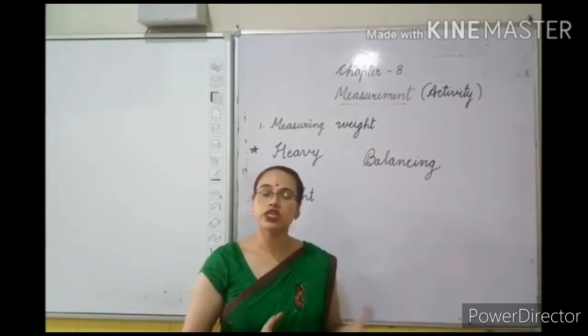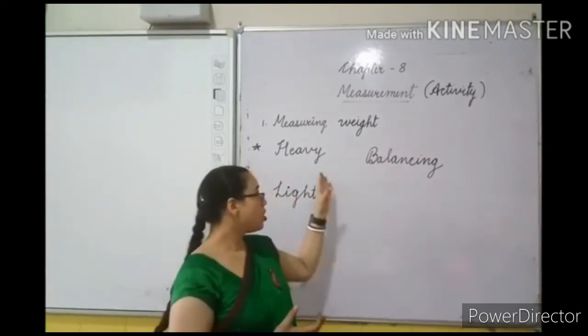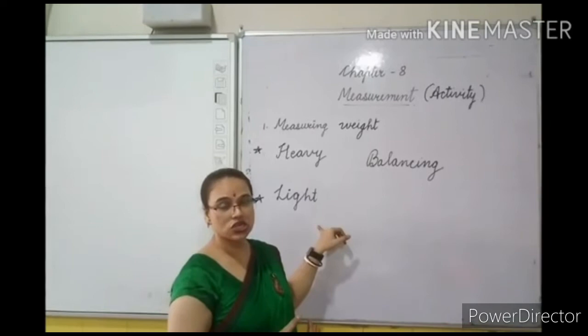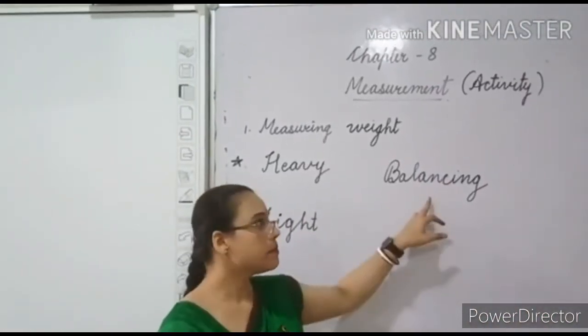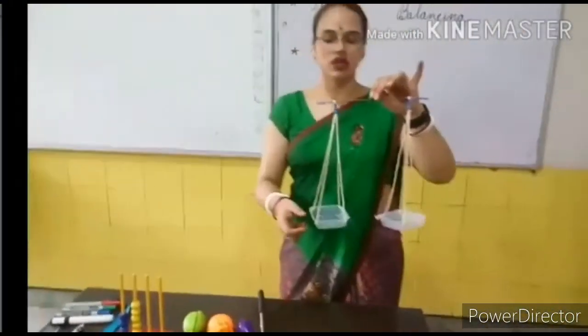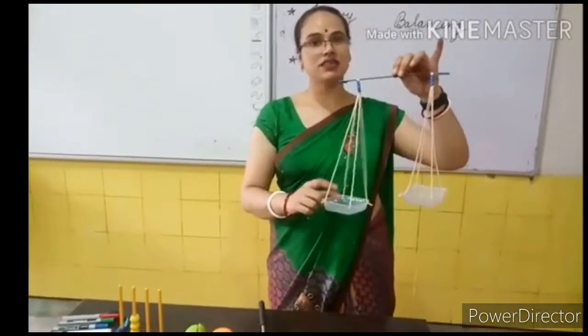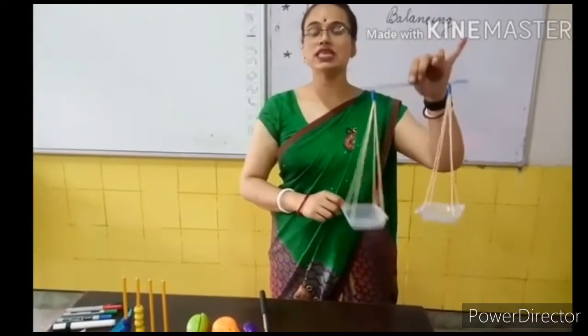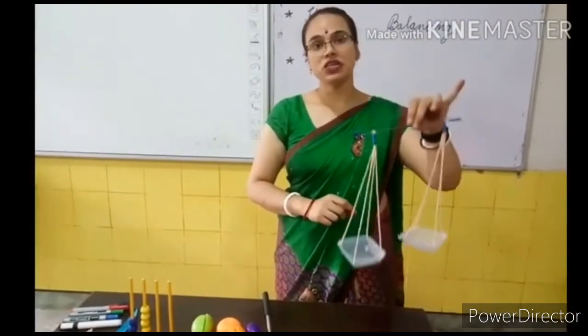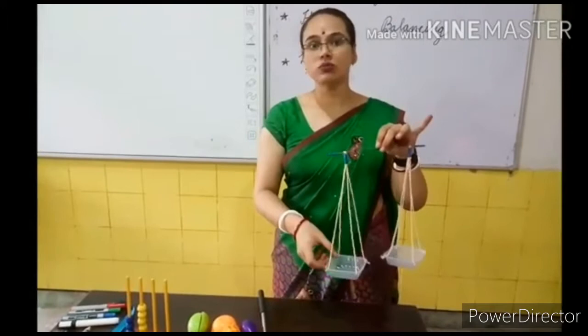How to measure which object is heavy or which object is light. So, for this, we have to use balancing machine. Now, see children, this is a balancing machine. With the help of this weighing scale, we measure the weight of any object.